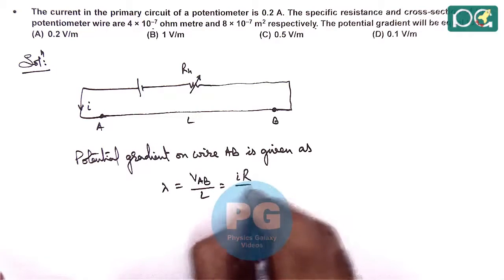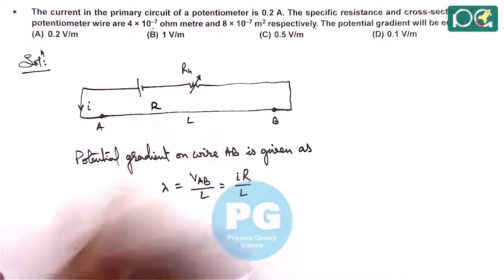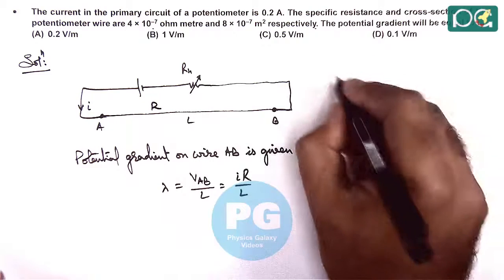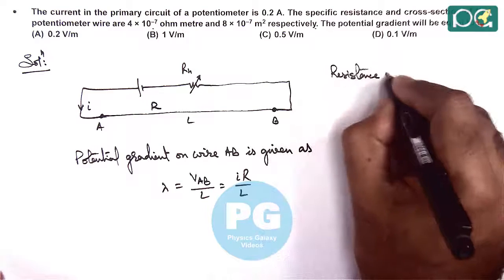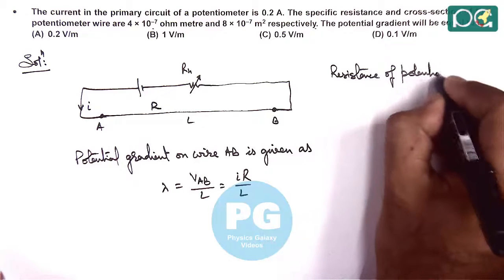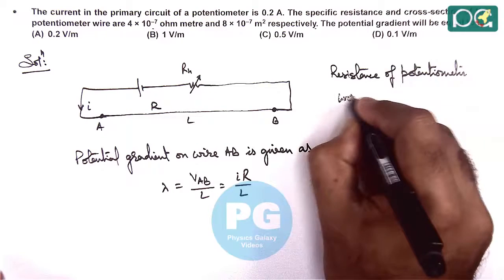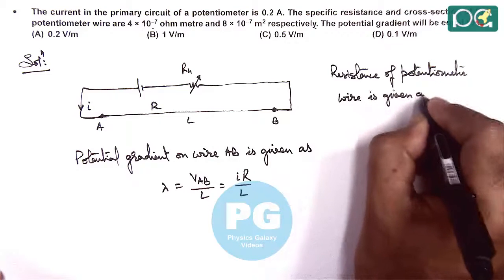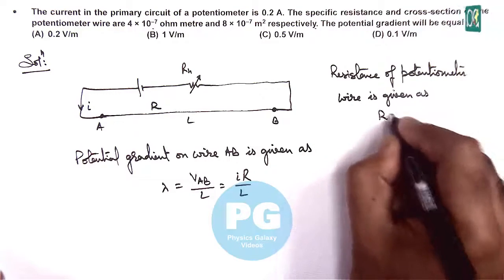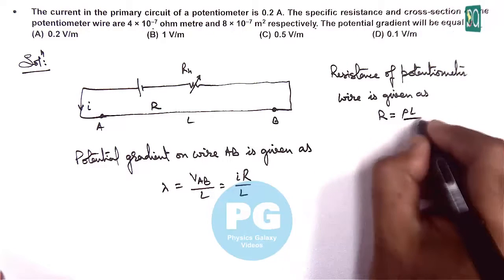And we can write resistance of potentiometer wire is given as R equals rho L by A, where rho is specific resistance, L is length, and A is cross-sectional area.